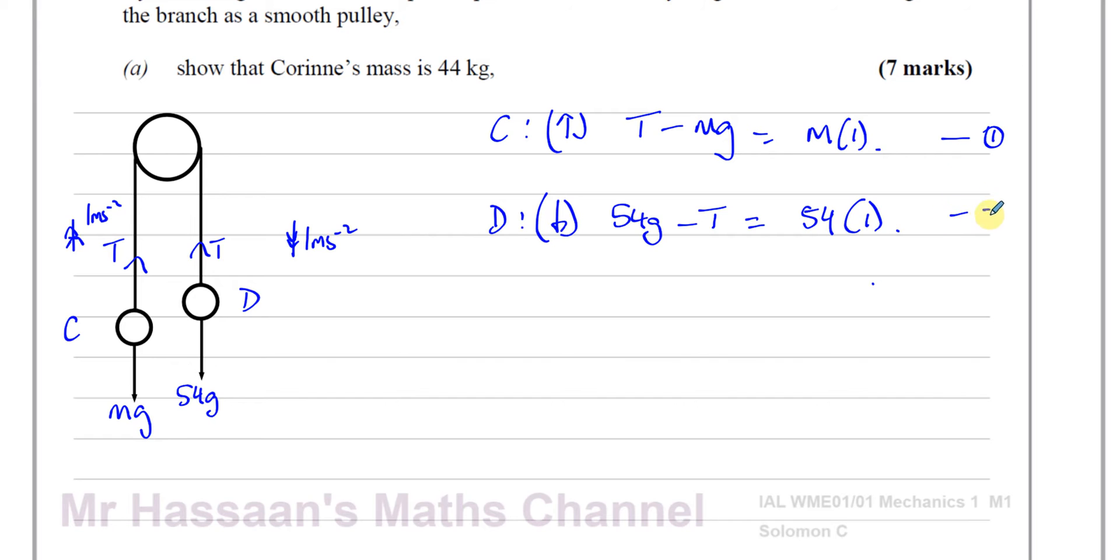I'm going to show you how to do it in a way when you don't calculate the tension first. We can call this equation 1 and call this equation 2. And if we add these two equations, the tension gets eliminated from our equations. If we add them together, the T disappears. You'll have 54G minus MG equals M plus 54. Now we want to find what M is. We can bring the M's on one side and everything else on the other side. So 54G minus 54 is equal to M plus MG.